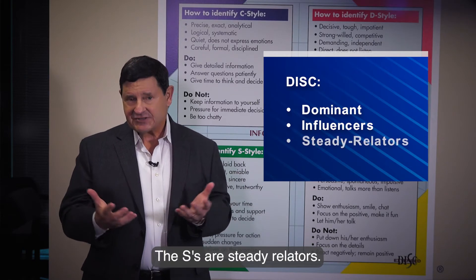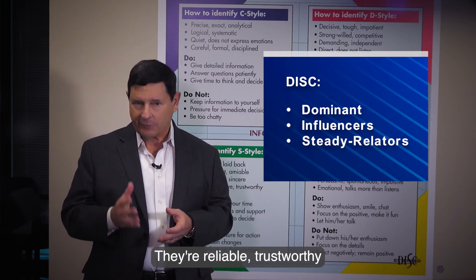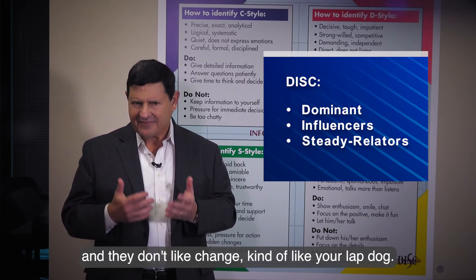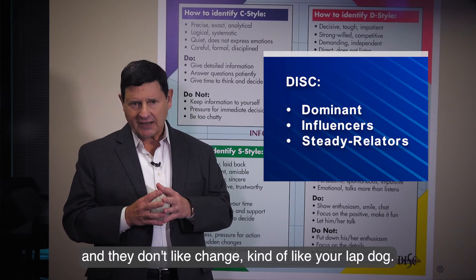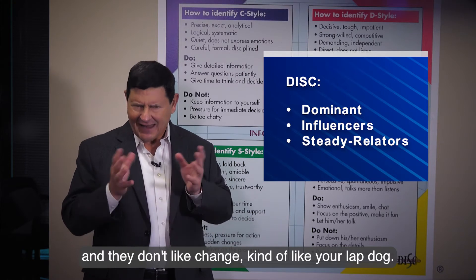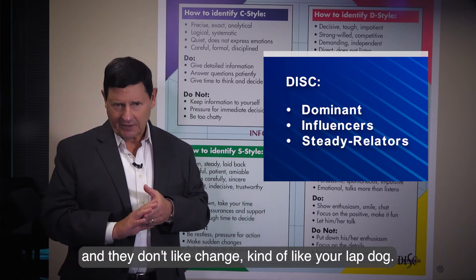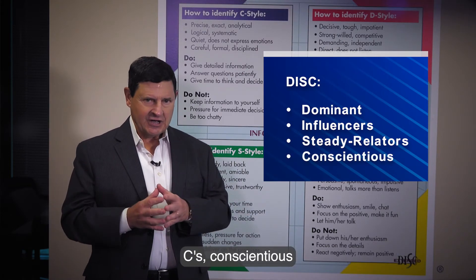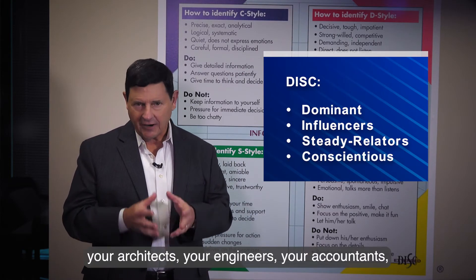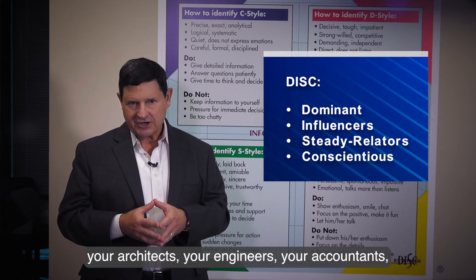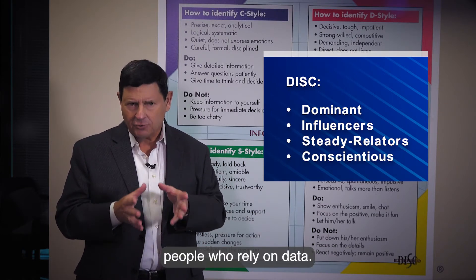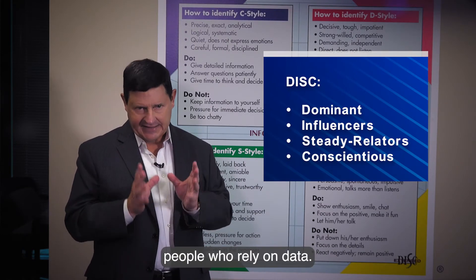The S's are Steady Relators — reliable, trustworthy, and they don't like change, kind of like your lap dog. C's are Conscientious: your architects, your engineers, your accountants — people who rely on data.